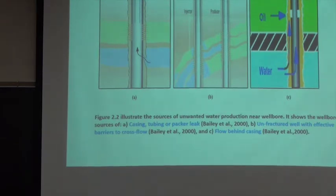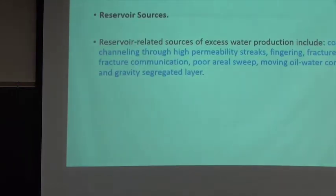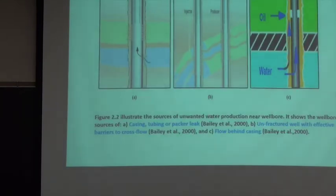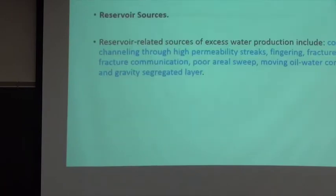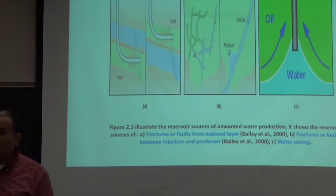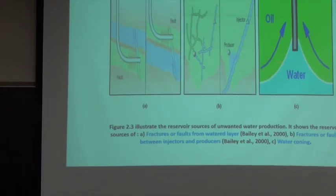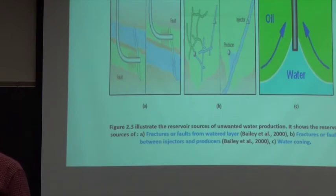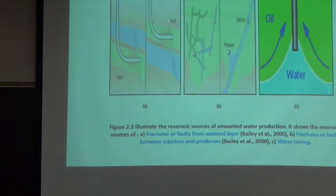You can see water coming behind the casing here. We also have another source called the reservoir source, separate from the wellbore source. This is our wellbore and this is our reservoir. We can have a situation called water coning - when you produce at a high flow rate, it works like a suction and you pull water up along with the oil. Also, fractures from a water-bearing layer make it easy for water to transfer from the water source to the oil source.